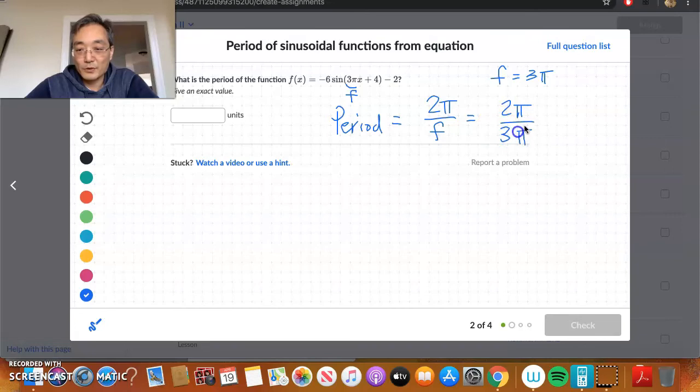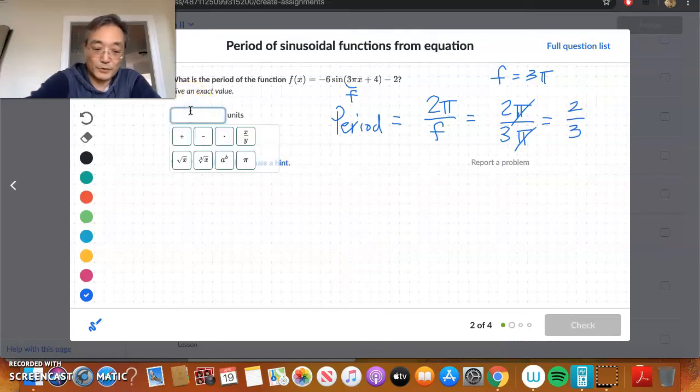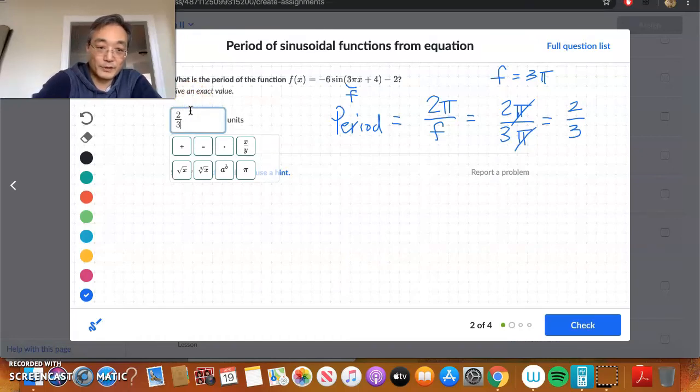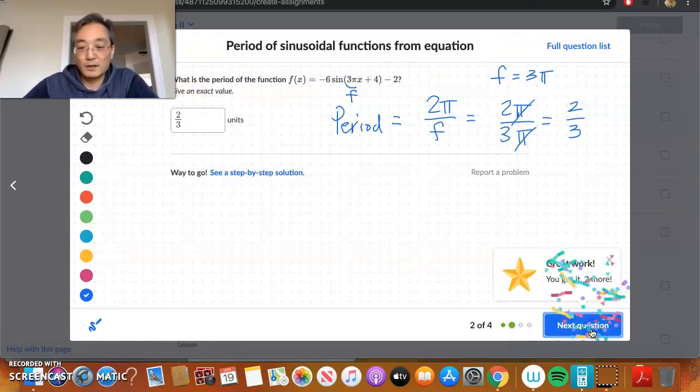So, if we now plug in 3 pi in for f, we're going to get 2 pi over 3 pi. And, we know that we can cancel out the pi's here, giving us just 2 thirds. And, that is our period. So, let's type it in. We have 2 over 3, which is correct again. Let's do 2 more.